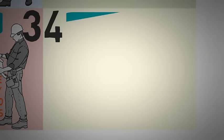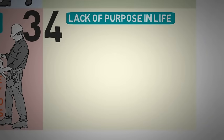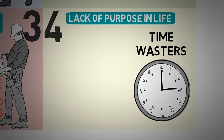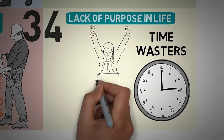Quadrant four activities are also related with the lack of purpose in life. The activities here are not urgent nor important. They are pure time wasters and provide no meaningful value. As Stephen Covey said, people who spend time almost exclusively in quadrants three and four basically lead irresponsible lives. Effective people stay out of quadrants three and four because, urgent or not, they are not important.